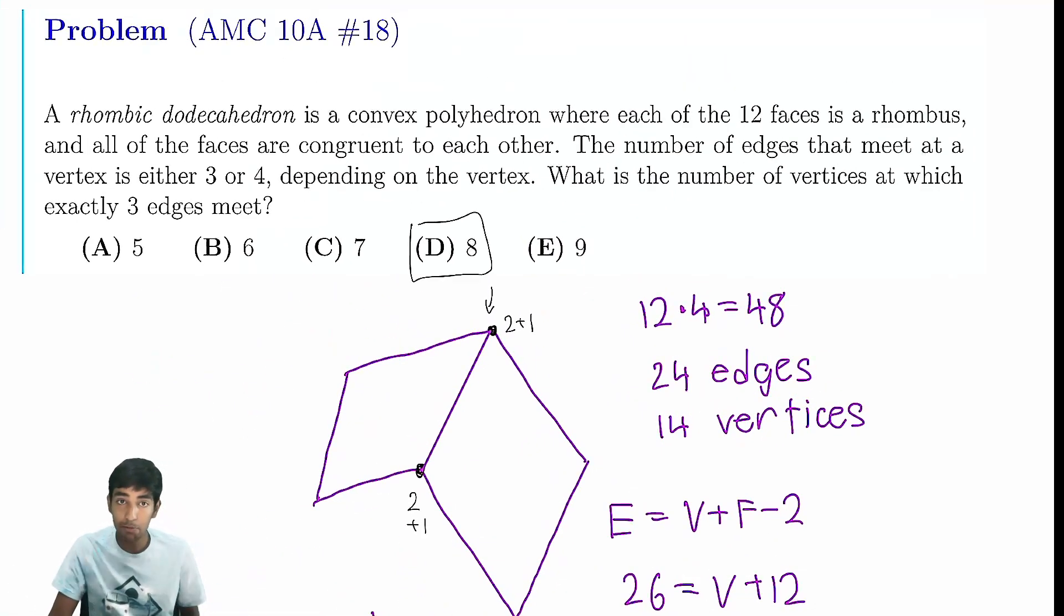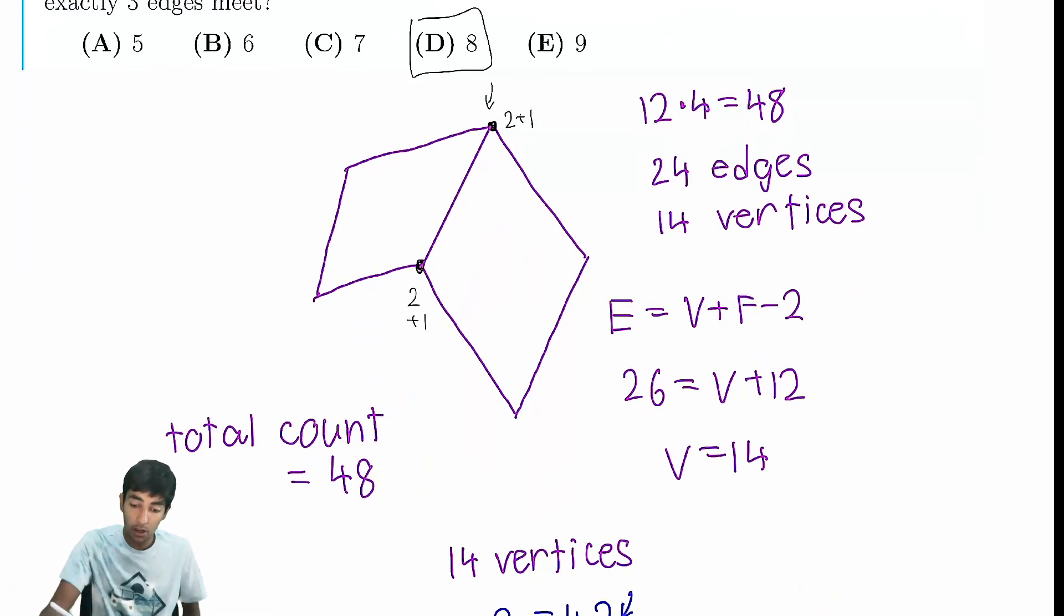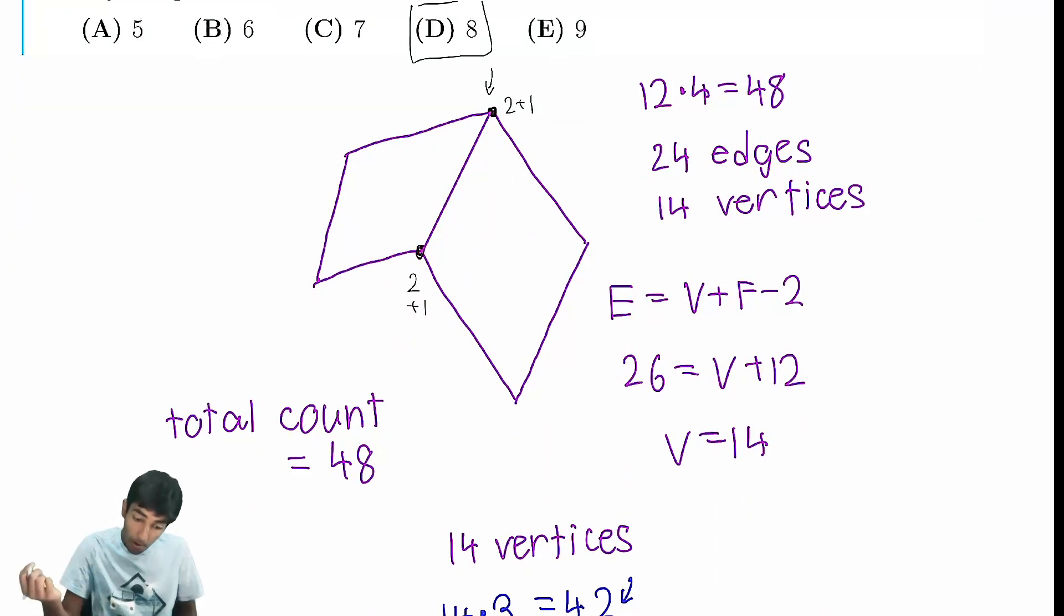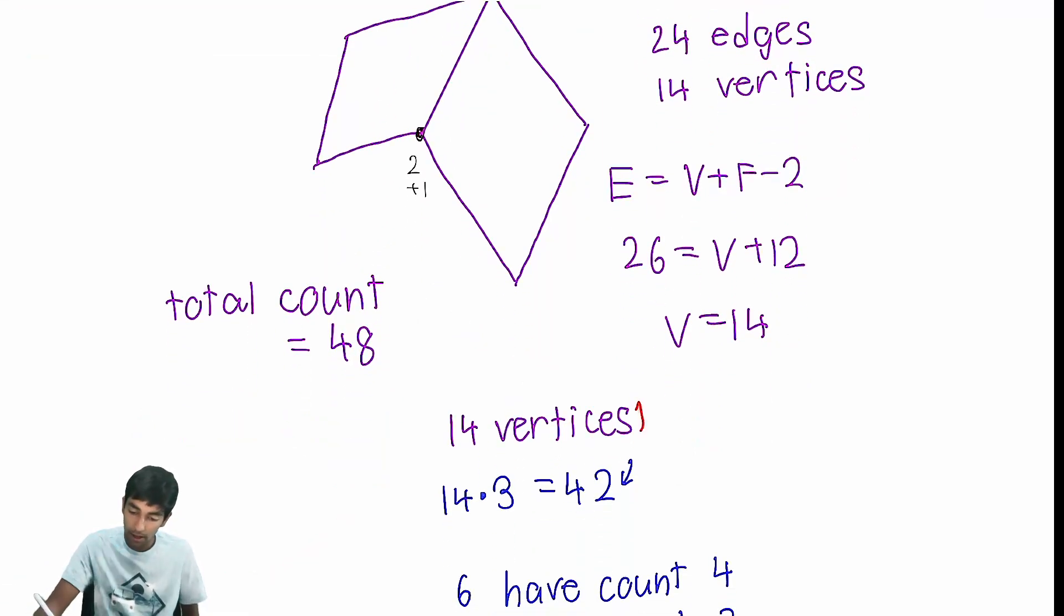So the key idea in this problem was realizing we can easily find the number of edges because each edge is on 2 faces. Then we use Euler's polyhedron formula to find the number of vertices. And then we see each edge contributes 1 to both of these counts. So their total count is 48 amongst 14 vertices. And then we can easily see 8 of them have to have 3 edges going out of them, and 6 of them have 4 going out of them. Thanks for watching!